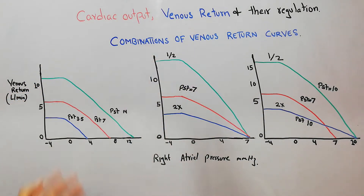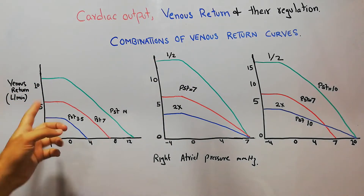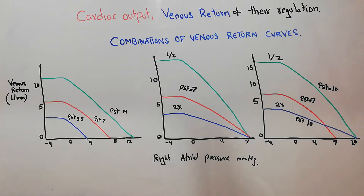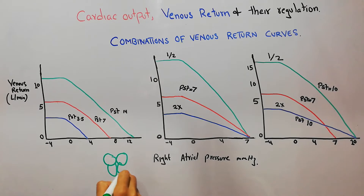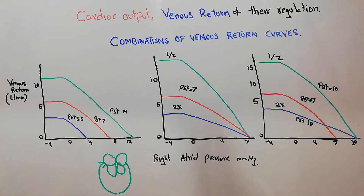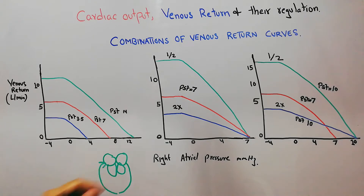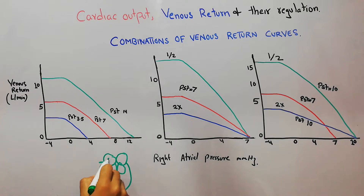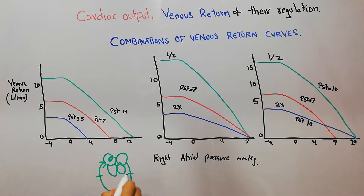Venous return is basically the amount of blood that returns to the heart every minute. The human heart has two atria and two ventricles — it pumps blood into the periphery and that blood comes back. The amount of blood pumped by the heart every minute is cardiac output, and the amount returning to the heart is venous return. Different factors affect venous return: right atrial pressure, resistance to venous return, and mean systemic filling pressure, which pushes blood towards the heart.